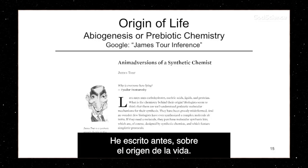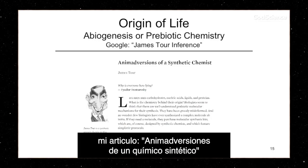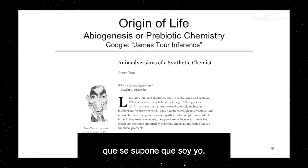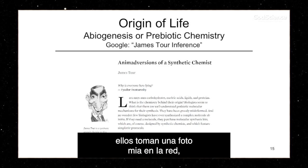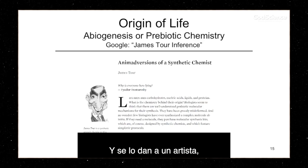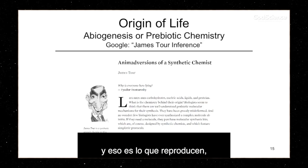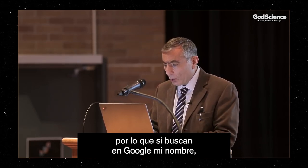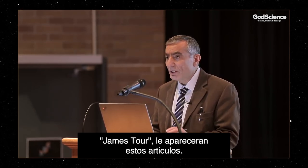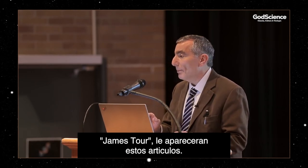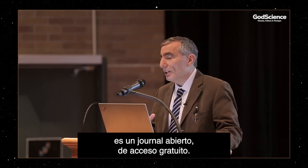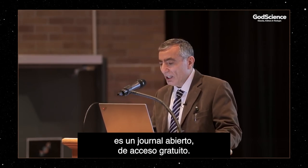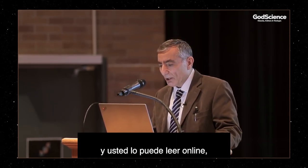I've written on origin of life before. I've written on what's called 'Inanimate Versions of a Synthetic Chemist.' That is supposed to be me — you agree to write for this journal and they take a picture of you off the internet and give it to some deranged artist, and that's what they reproduce. If you Google my name, James Tour, these articles would pop up. It's an open source journal, so it's free and you can read it right there online.